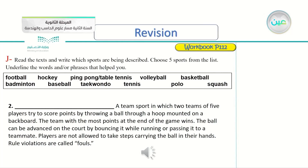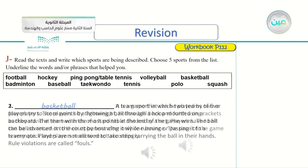Points by throwing a ball through a hoop — a hoop, it's like a net — mounted on a backboard. The team with the most points wins. They are using a ball and it's forbidden to carry the ball even though this sport uses hands. So the answer is basketball. The ball can be advanced on the court by bouncing it while running or passing it to a teammate. Players are not allowed to take steps carrying the ball. Rule violations are called fouls. This is basketball.